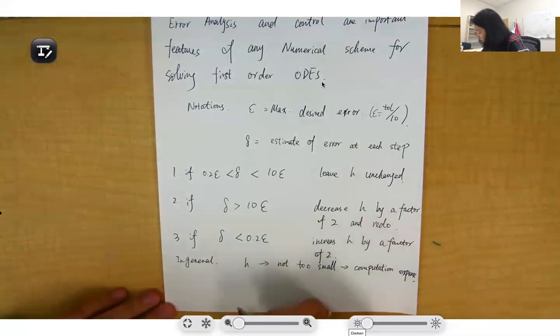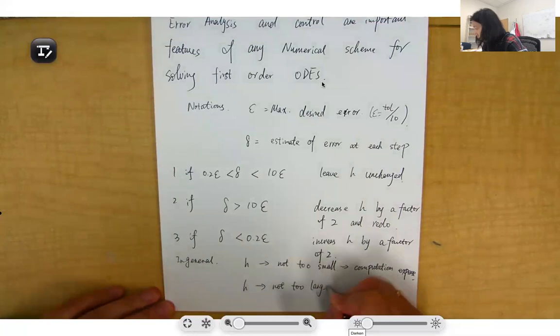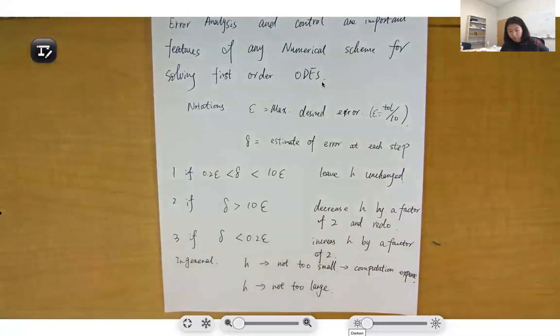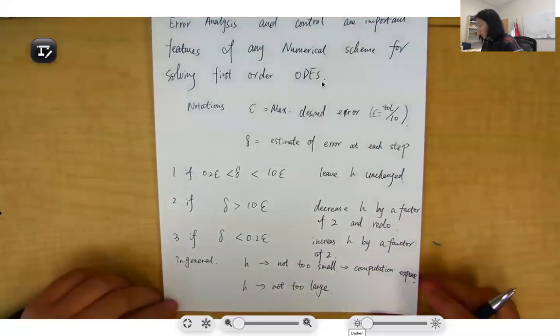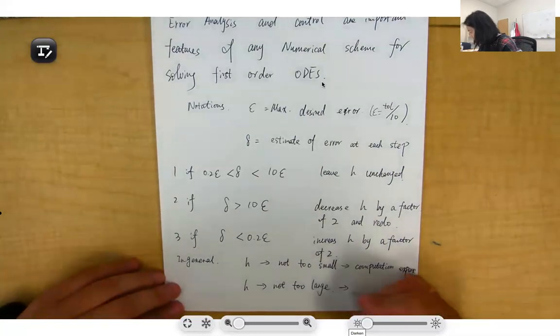And we also don't want h too large. You probably will never converge, or it will lead to significant error affecting the accuracy.